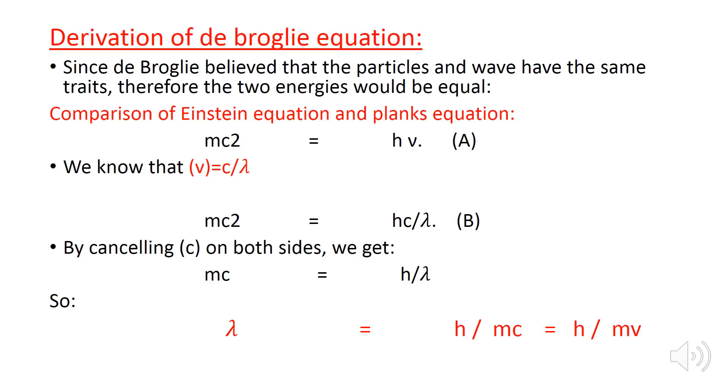We know that nu is the frequency, which equals c divided by lambda. Now, putting the value of frequency in equation A, the equation becomes mc squared equals hc divided by lambda. By cancelling c on both sides, we get mc equals h divided by lambda, where lambda equals h divided by mc.